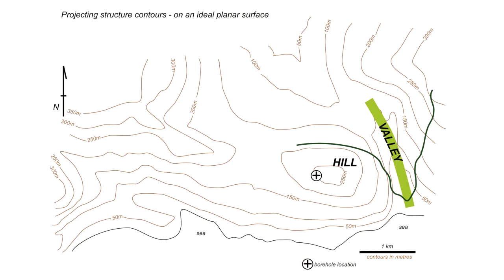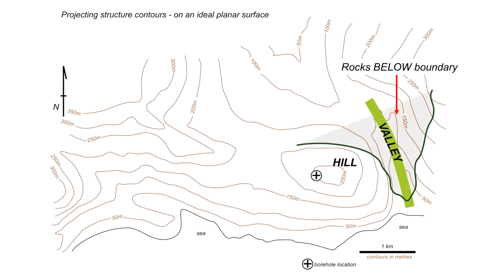Now let's look at the shape the geological boundary makes through this landscape. It deflects in and out of the valley — making a V shape — and we can use this pattern qualitatively to say that the geological boundary dips southwards. If the boundary dips south, its outcrop trace will pass into the hill, so we'd expect to encounter it in the borehole. The ground deeper in the valley lies underneath the boundary, so that area represents rocks below the geological boundary, while the hilltop represents rocks on top.